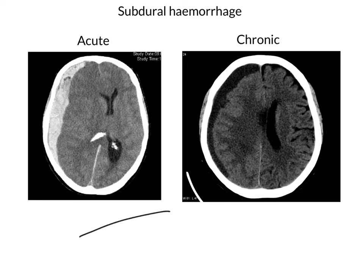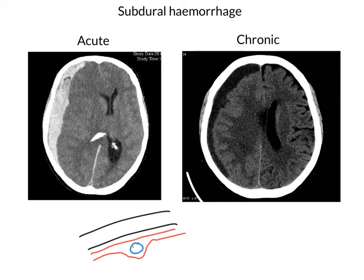Here in black are the two tables of the skull. In red we're going to draw the periosteal dura, and also in red we're going to draw the meningeal dura. Wherever the periosteal and meningeal dura separate, we form these dural venous sinuses. Here in blue is one of the dural venous sinuses.